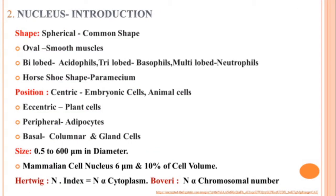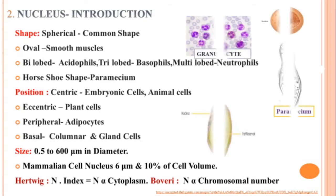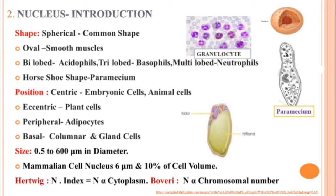If you look at the shape, it varies based on structure and function. The common shape of the nucleus is spherical, but in smooth muscles it may be oval. In granulocytes like acidophils it is bilobed, in basophils it is trilobed — you can see the diagram here — and multilobed in neutrophils. In paramecium, as the image shows, the large nucleus is horseshoe-shaped.